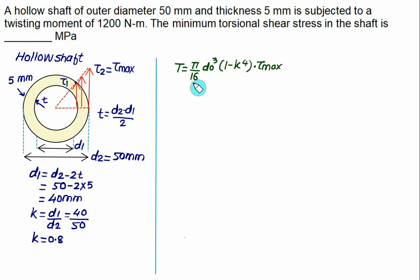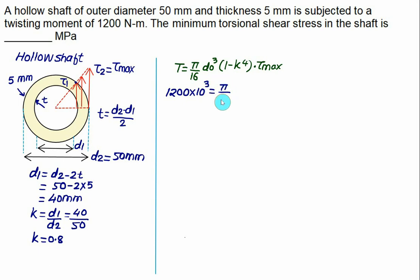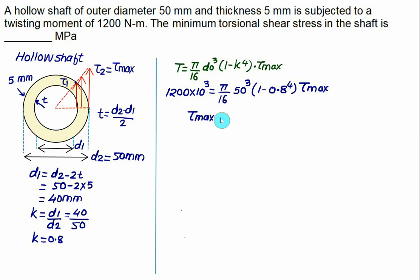Using the torsion formula, the maximum shear stress occurs on the outer surface. Torque is 1200 Newton meter, which must be converted to Newton mm by multiplying by 10³. The formula is: T = (π/16) × d2³ × (1 − k⁴) × τ_max, where d2 is 50 and k is 0.8. Solving, the maximum shear stress comes out to be 82 MPa.